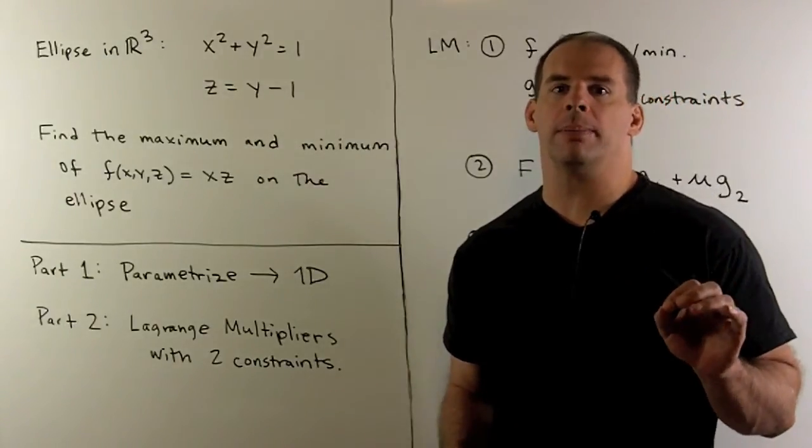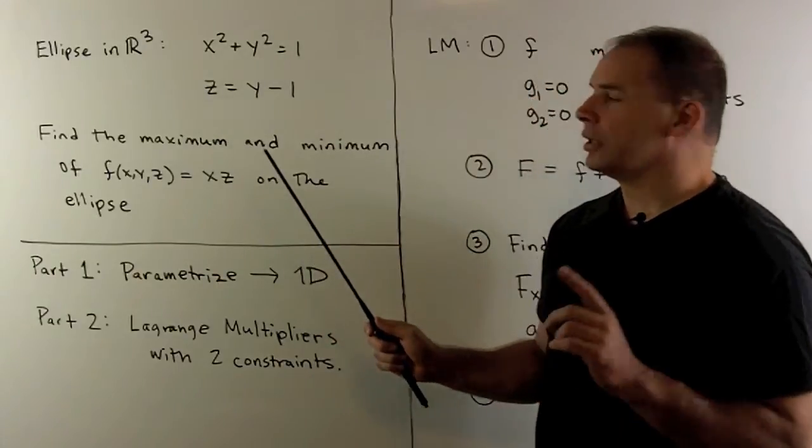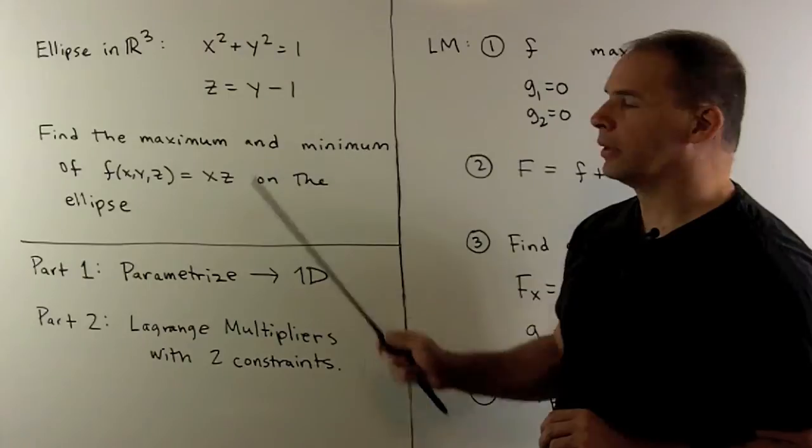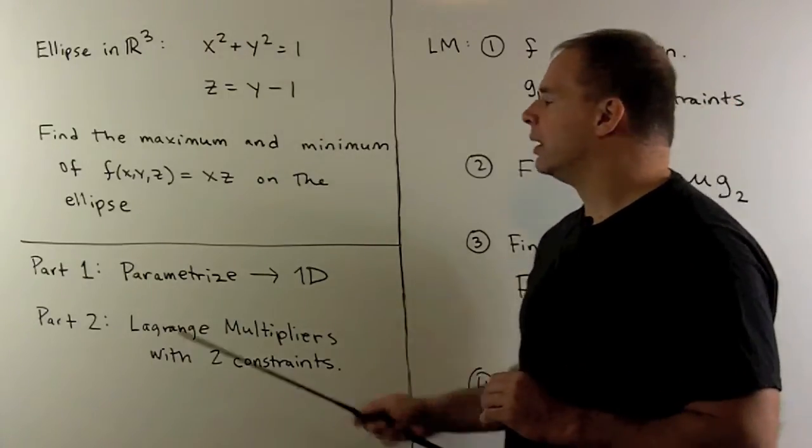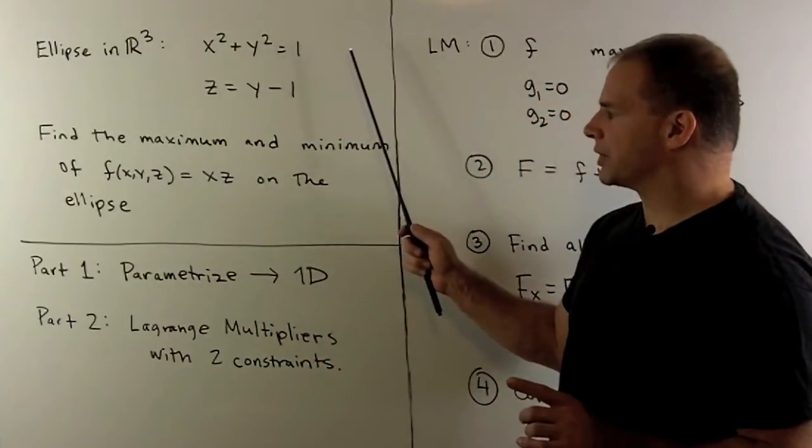Part 2 of our optimization problem. We have an ellipse in R³, given as the intersection of the cylinder with this plane. The problem is to find the maximum and minimum values of the function f(x,y,z) equal to xz on the ellipse.